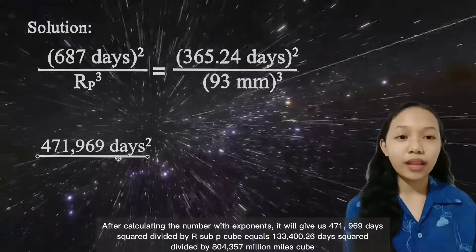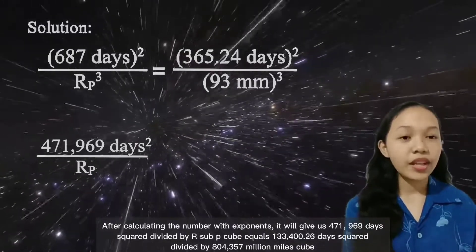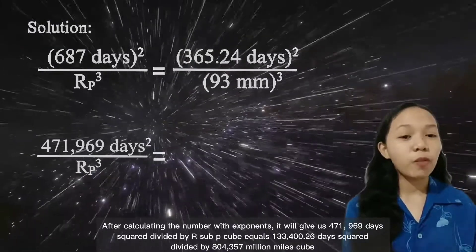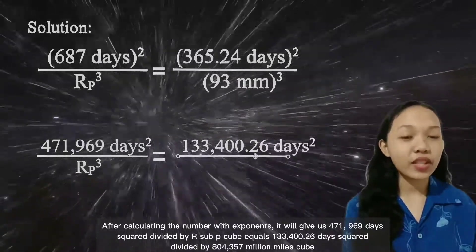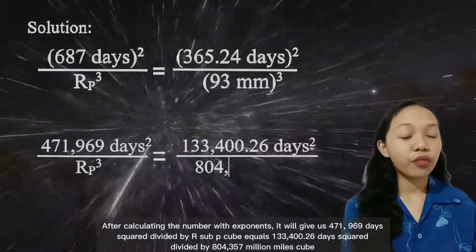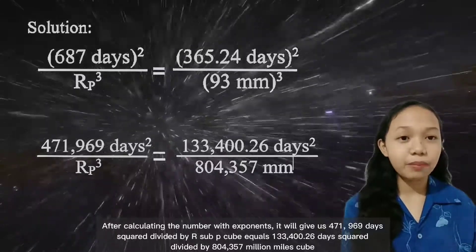...it will give us 471,969 days squared divided by R sub P cubed equals 133,400.26 days squared divided by 804,357 million miles cubed.